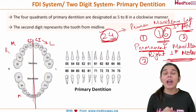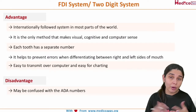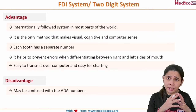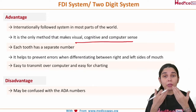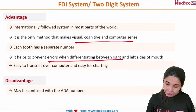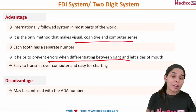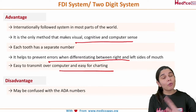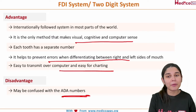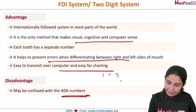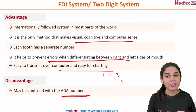The FDI system has several advantages: it is worldwide accepted, each tooth has a separate number, it prevents errors when differentiating left and right sides, and it is easy to transmit over computer and easy for charting. It can be confused with the ADA numbering system, where the entire oral cavity is numbered 1 to 32 without dividing into quadrants.